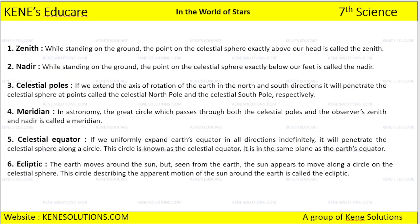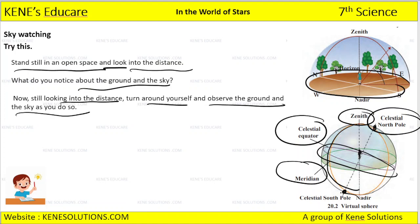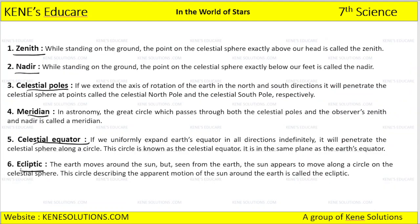Now let's talk about some terms: what is the zenith, what is the nadir, what is the celestial pole, what is the meridian, what is the celestial equator, and what is the ecliptic? You can see in this figure: this is zenith, this is celestial equator, this is celestial north pole, this is meridian, this is celestial south pole, and this is nadir.